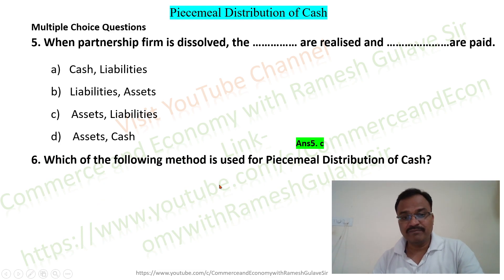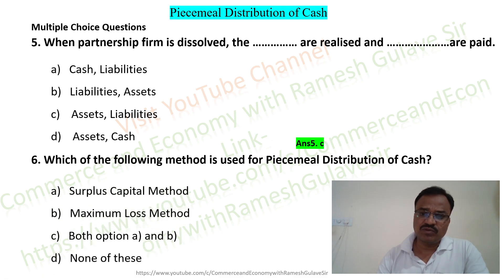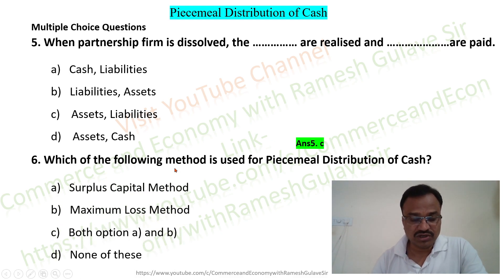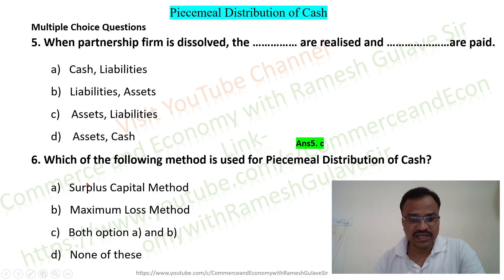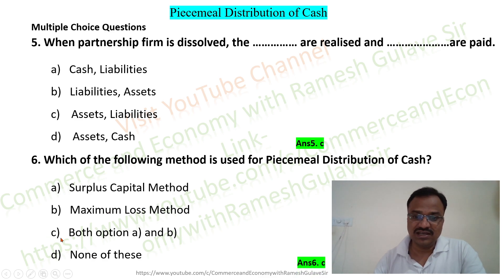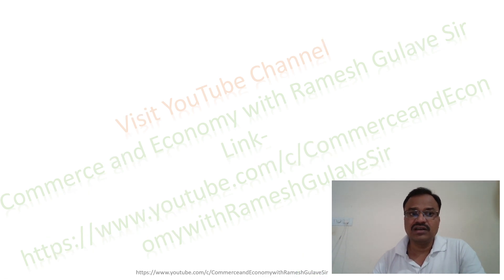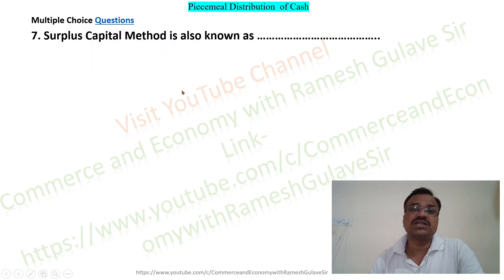Question 6: Which of the following methods is used for piecemeal distribution of cash? Options are: surplus capital method, maximum loss method, both, none of these. Both the surplus capital method and maximum loss method are methods of piecemeal distribution of cash, so option C is the right answer.